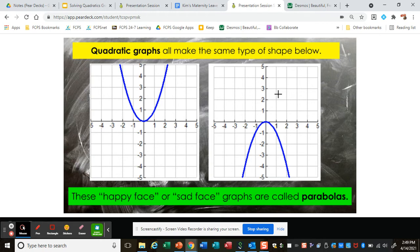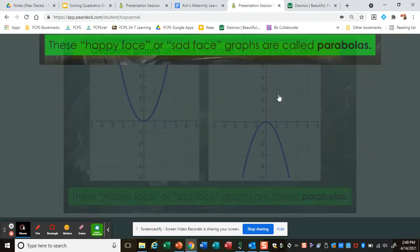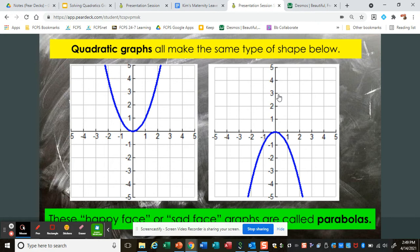Quadratic graphs all make the same type of shape. They either make happy faces or they make sad faces. Both of these shapes are called parabolas.